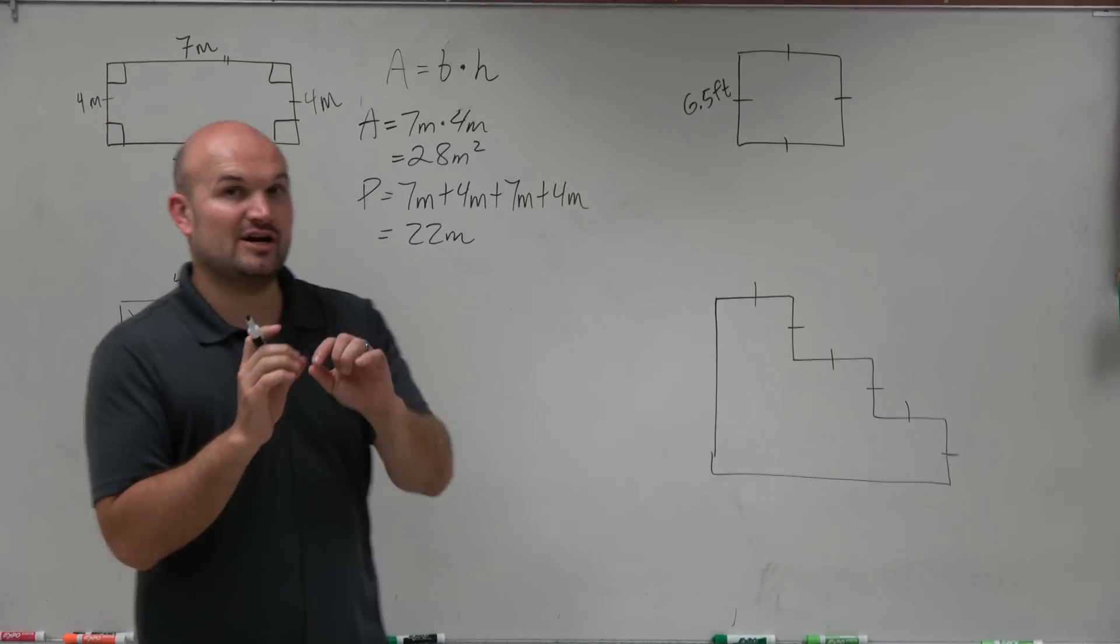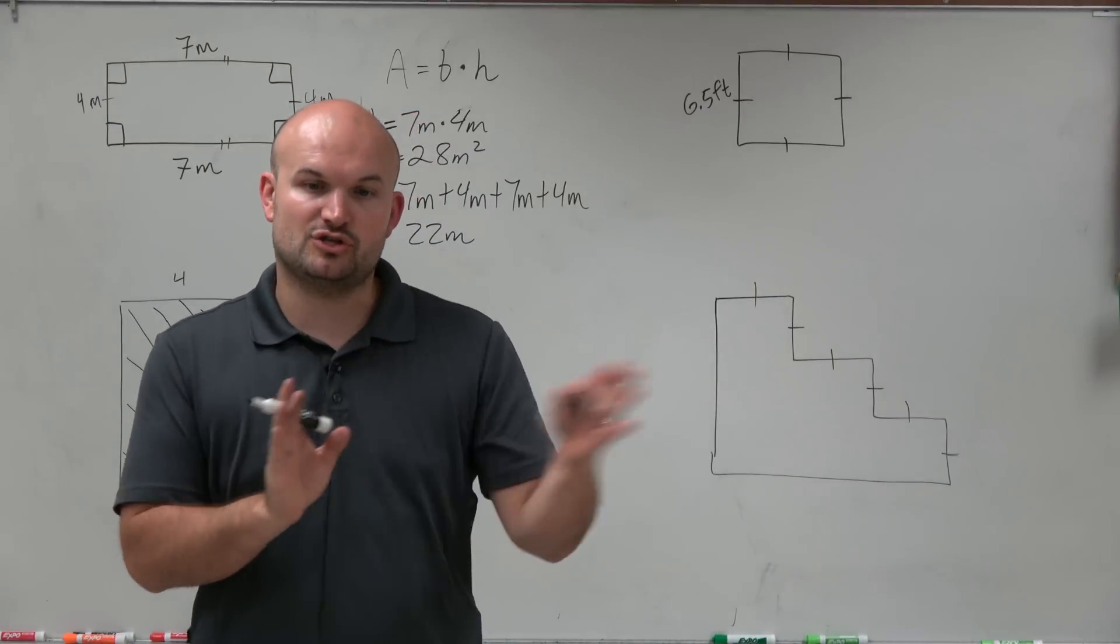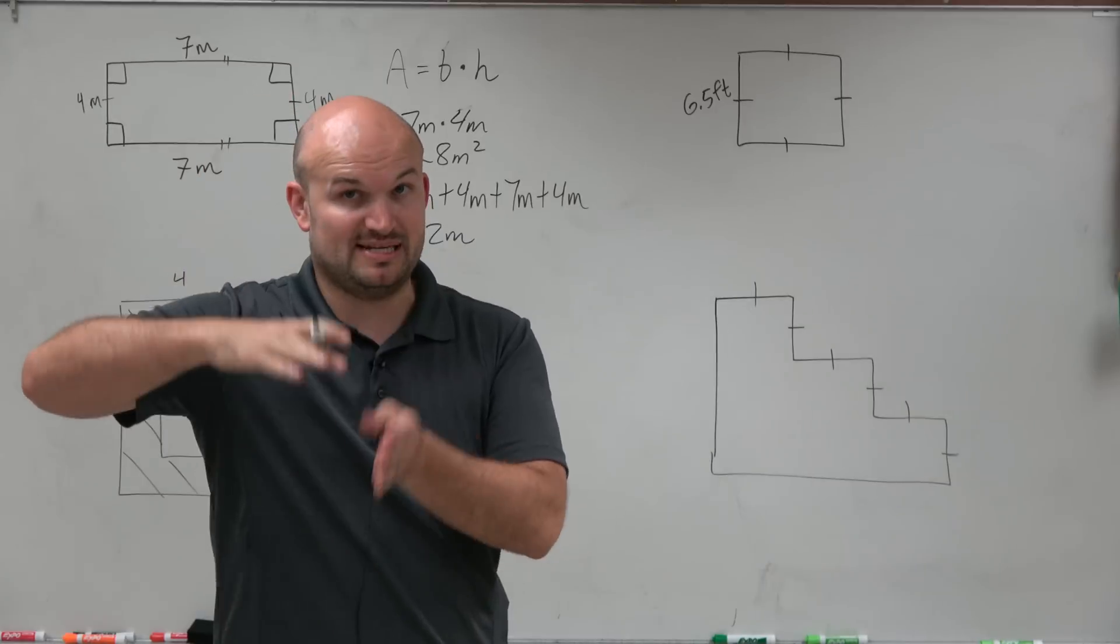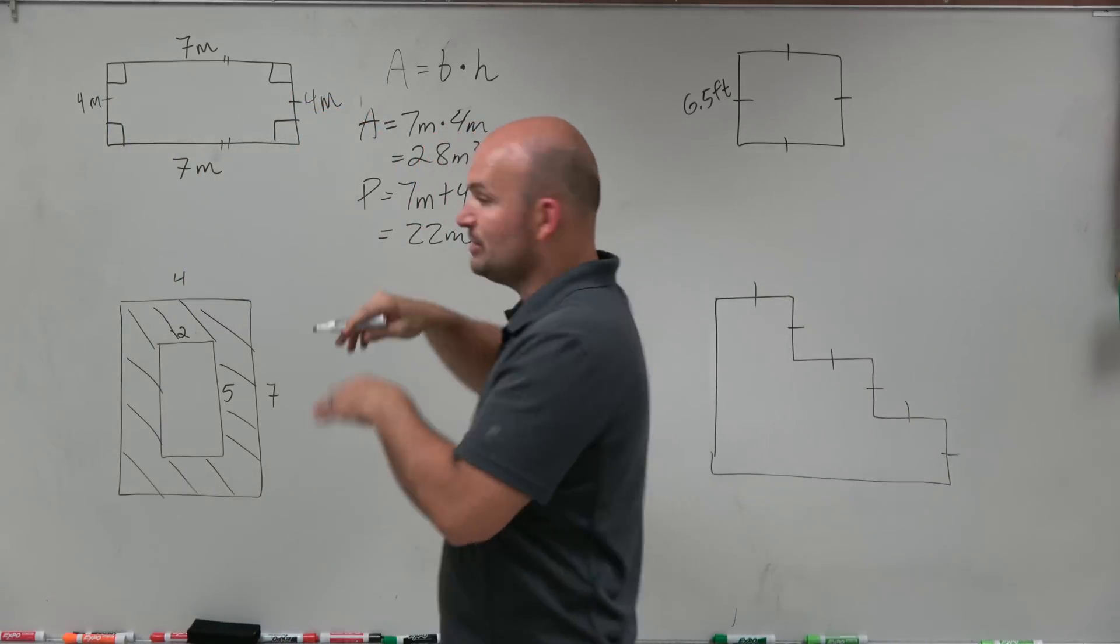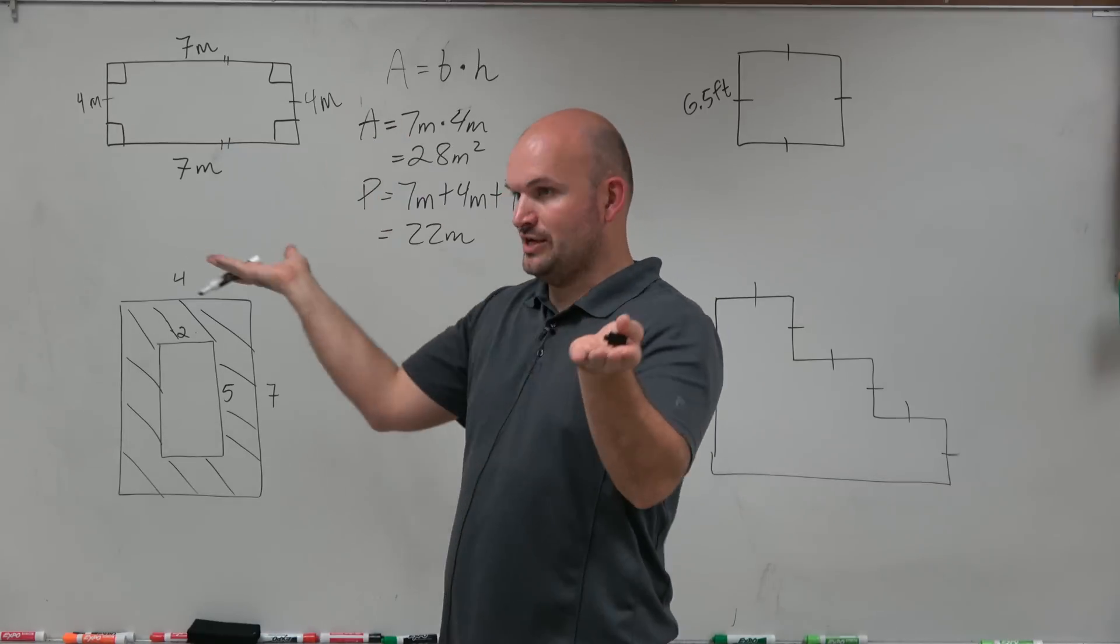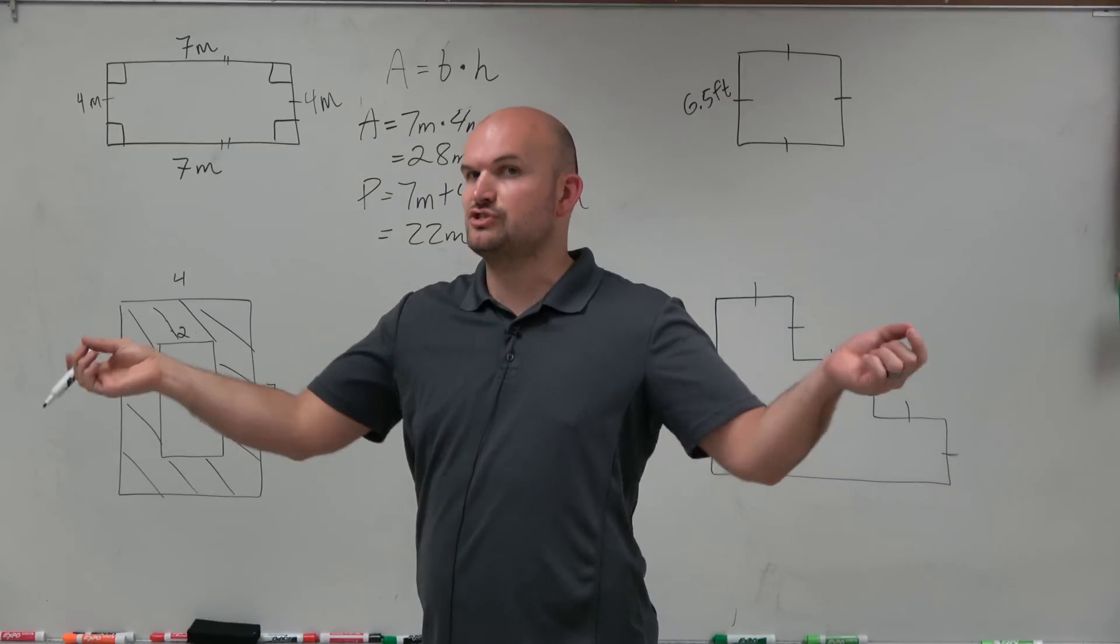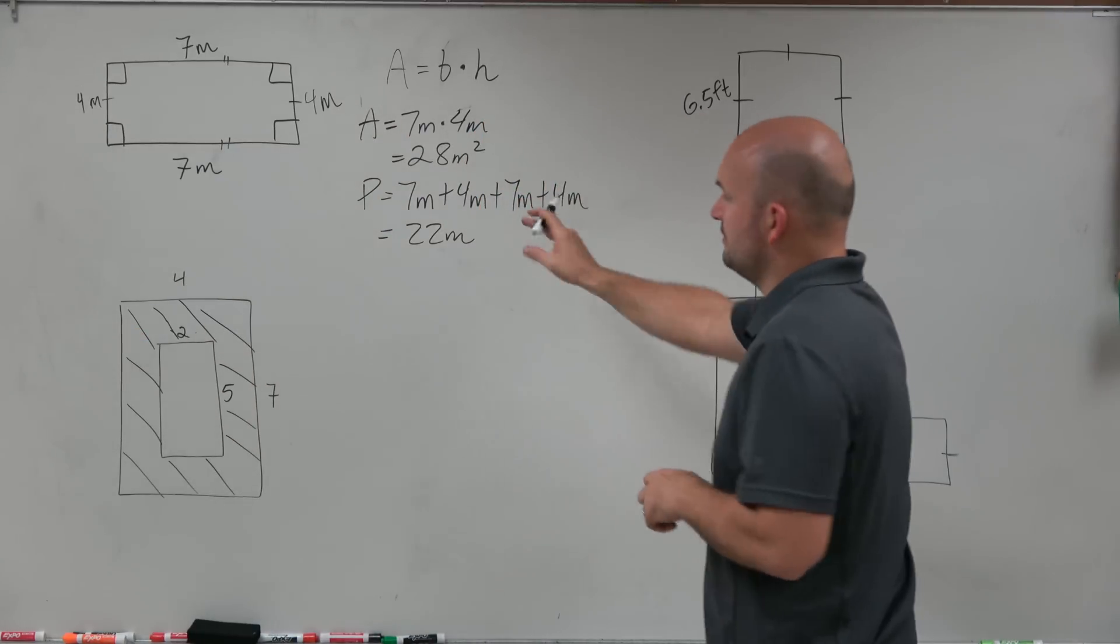Now remember, since area is dealing with two different dimensions - you're going left and right and up and down - you have two dimensions. That's why it's meters squared. Whereas perimeter, if you were to unfold that, you're just dealing with really one length of string. So therefore it's going to be just 22 meters.